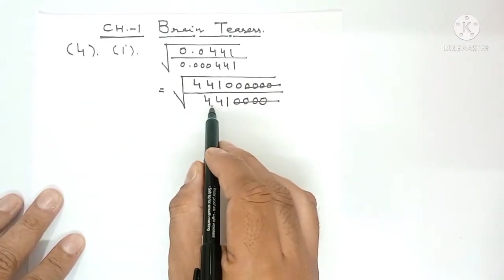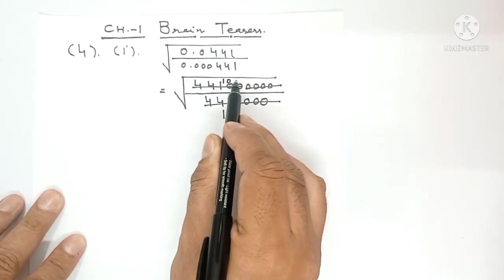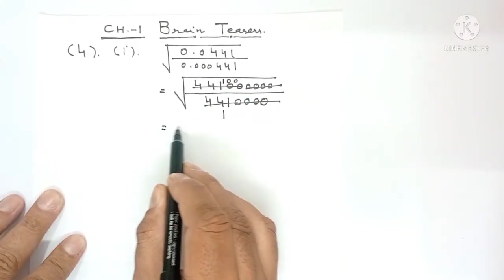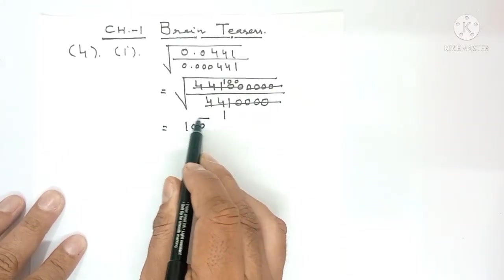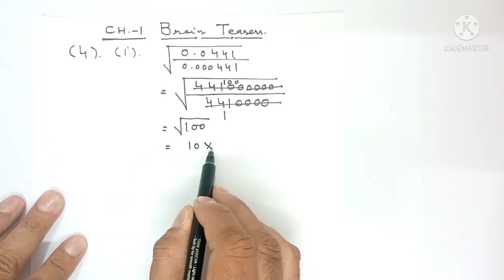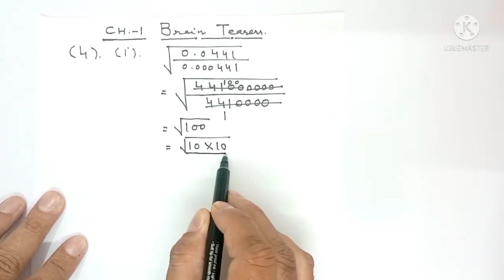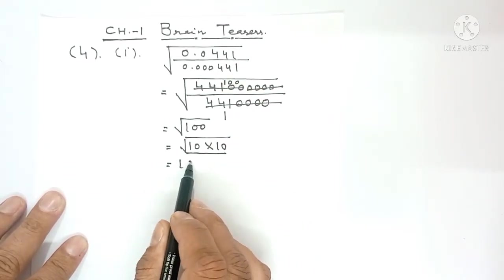Now cancel 4 zeros from the numerator with 4 zeros from the denominator. This leaves you with 2 zeros, and you get the square root of 100. Now 10 times 10 equals 100, so make a pair and from that pair you get 10 once.